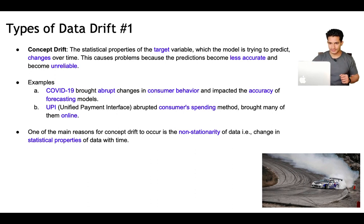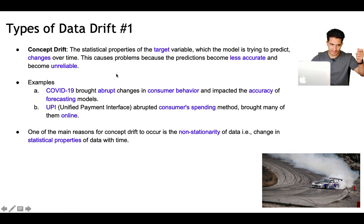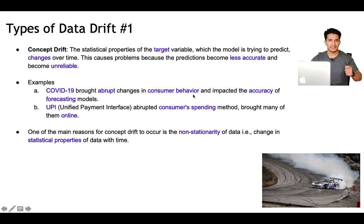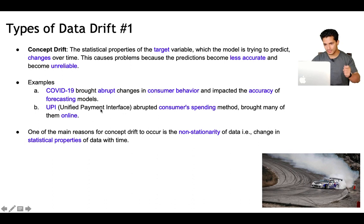The first type of drift is concept drift. The statistical properties of the target variable which the model is trying to predict changes over time. This causes problems because the predictions become less accurate and unreliable. An example is COVID-19, which brought abrupt changes in customer behavior and impacted the accuracy of forecasting models — offline purchases reduced, online purchases increased, and the type of purchases changed because people were staying more time at home.